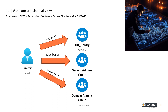Let's look at the consequences for Jimmy. Before the incident, Jimmy was using one account for all his activities: daily office work, server maintenance, and managing the Active Directory domain. Nowadays we know this is bad practice in terms of security. However, at the time the domain was built, there were no best practices, so this was how it was.